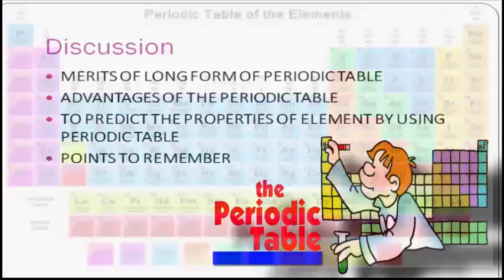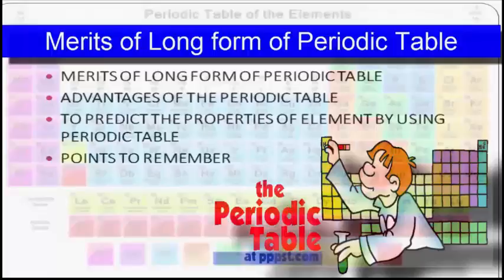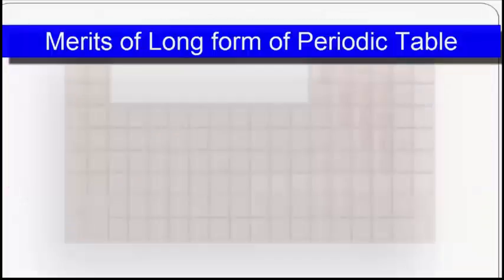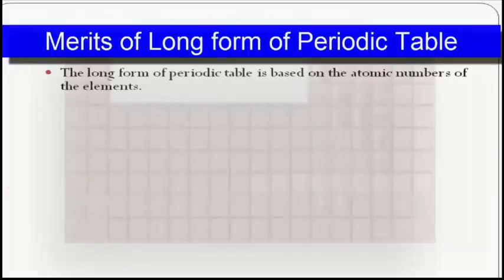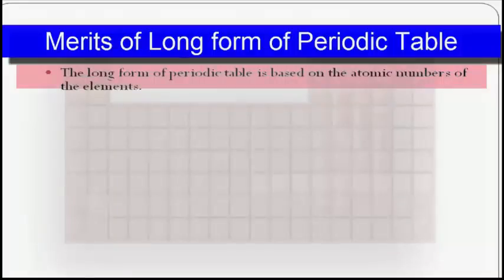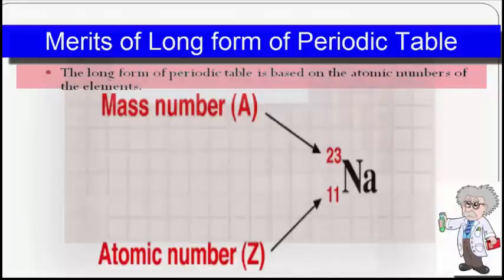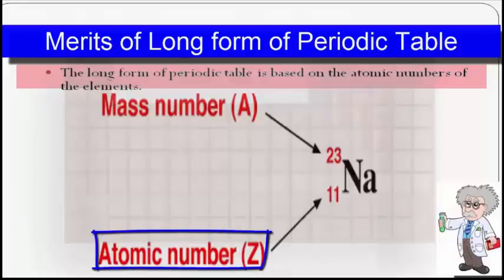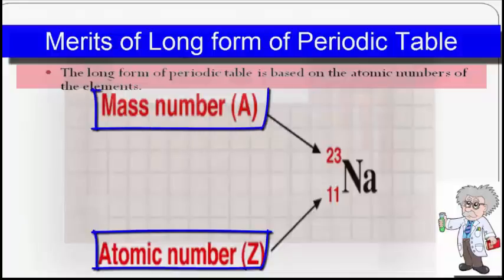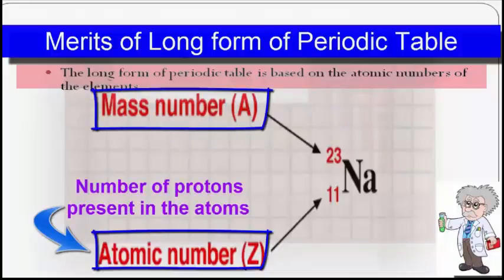The first merit of the long form of the periodic table is that it is based on the atomic numbers of the elements, compared to the short form of the periodic table which was based on atomic masses. As we all know, the atomic number is the number of protons present in the atom.